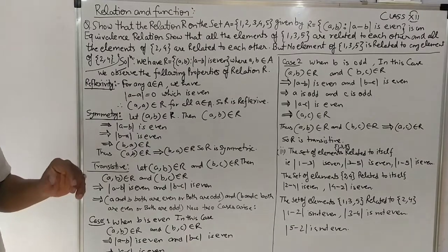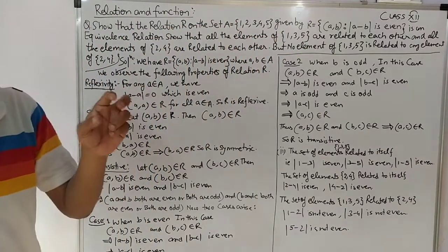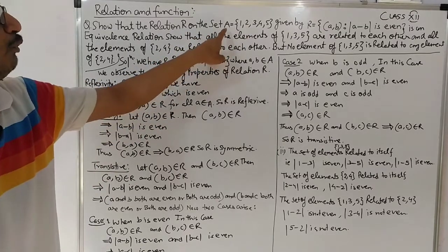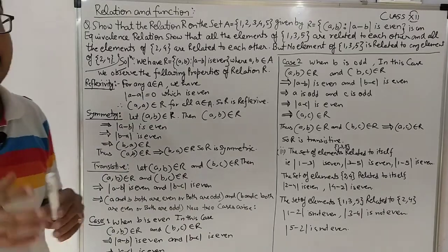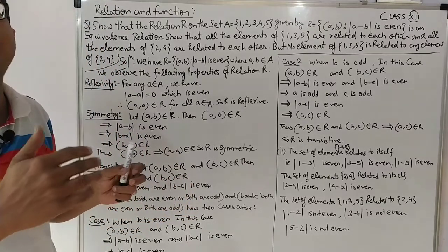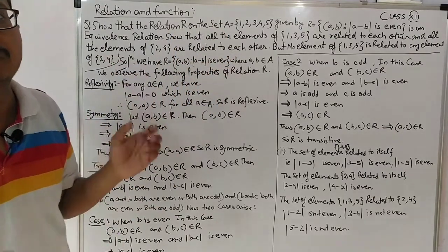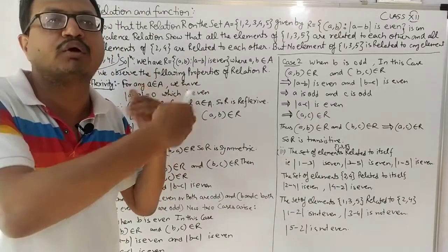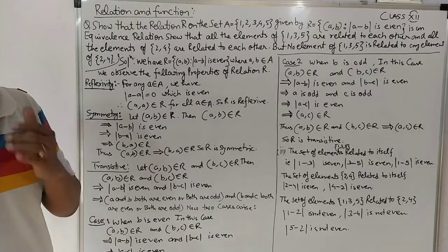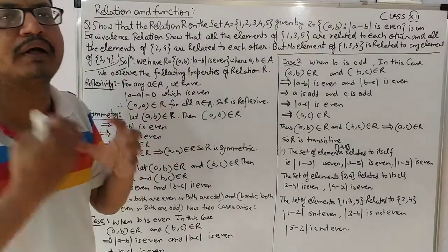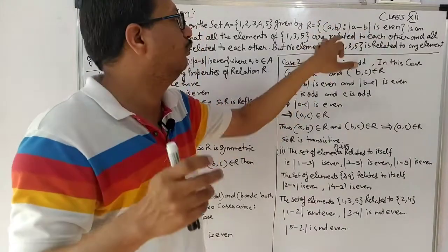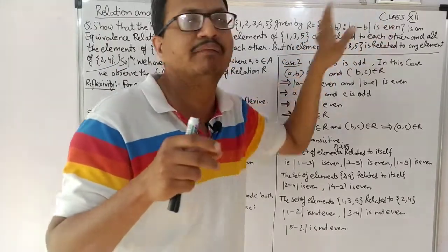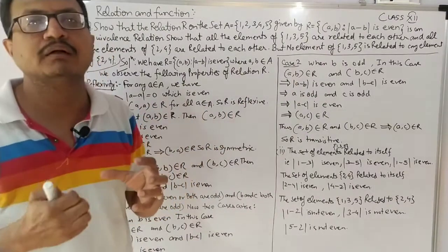कुछ बच्चों को confusion होता है कि relation दो sets का Cartesian product करने पर आता है, लेकिन यहाँ तो set A दे रखा है। Actual में relation is a subset of A cross B। यहाँ पर A cross A होगा, उसके बाद बहुत सारे ordered pairs का बड़ा set बनेगा और उसमें से जिस ordered pair के elements का difference even है, उन ordered pairs को select किया - वो हमारा relation हो गया।